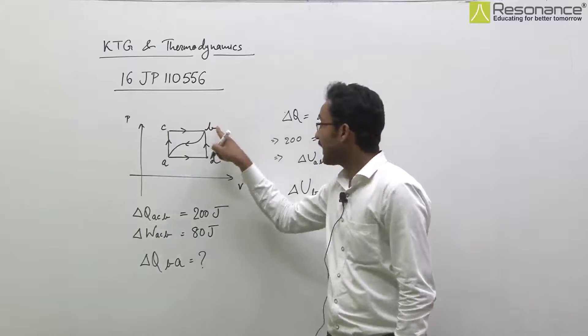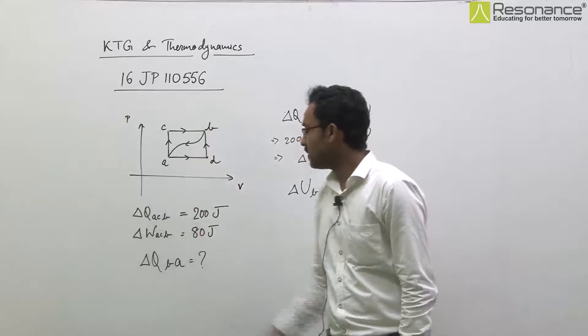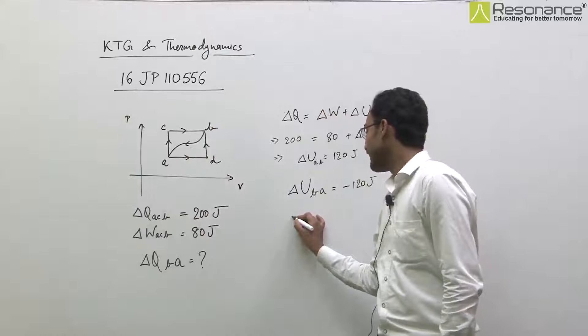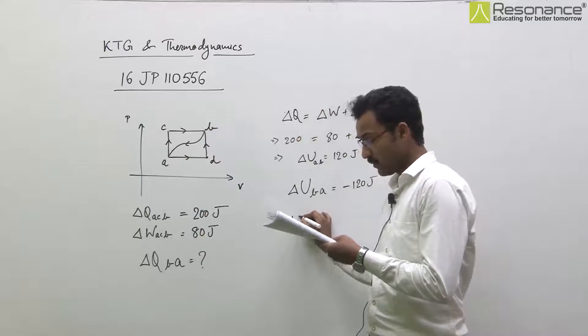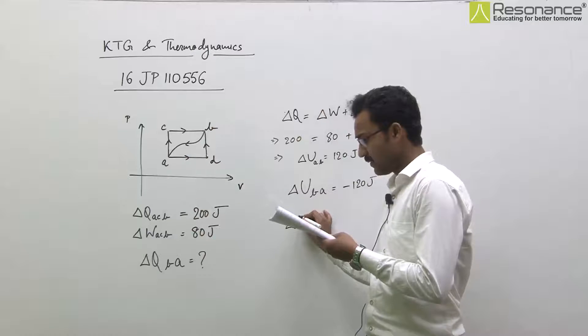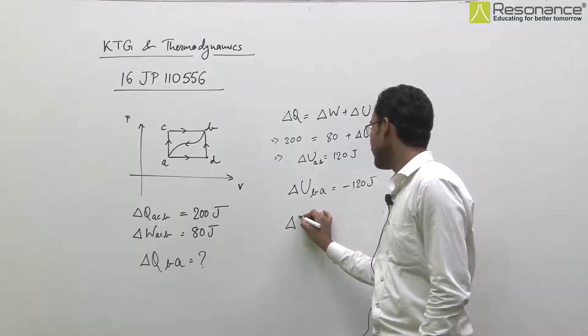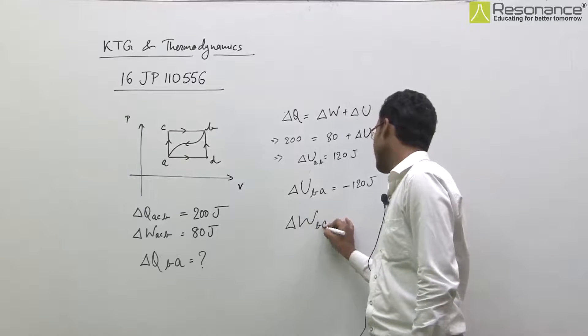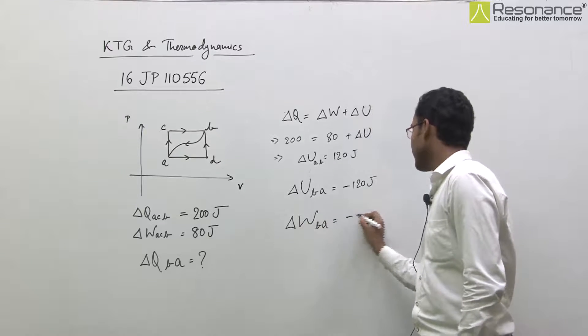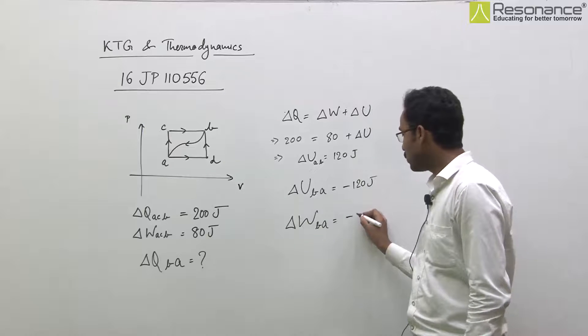Now, gas is taken from B to A through the process and work done on the gas is given. Work done on the gas B to A is given 52 joule.